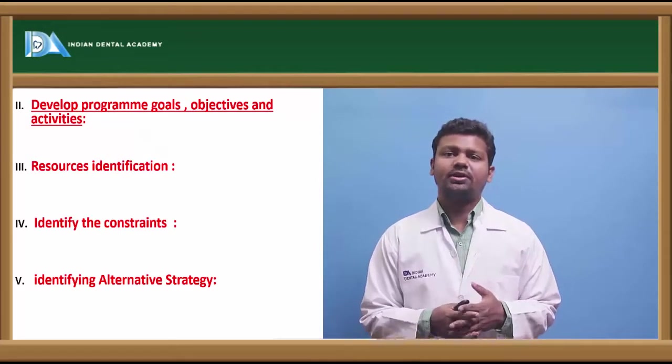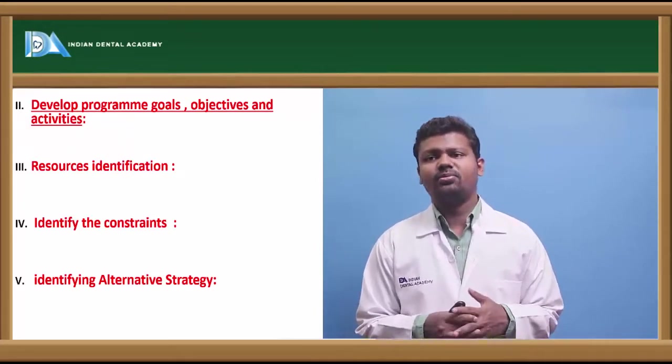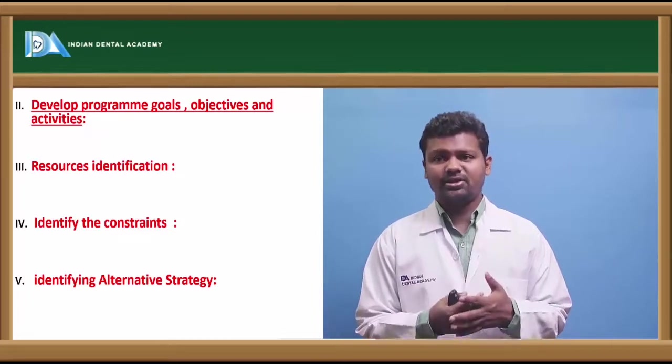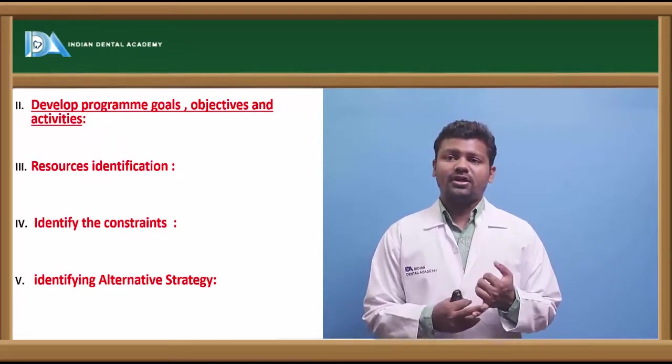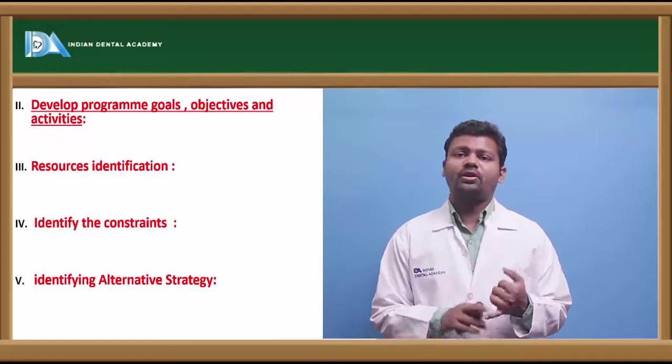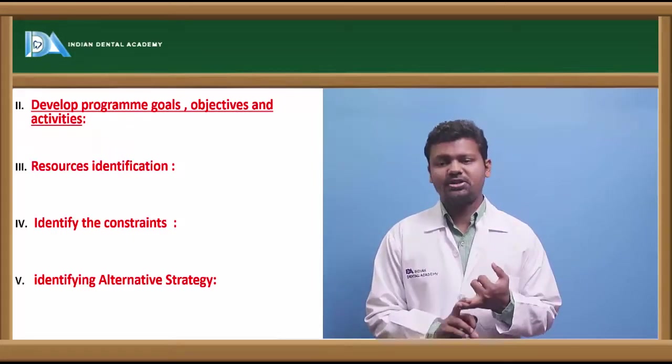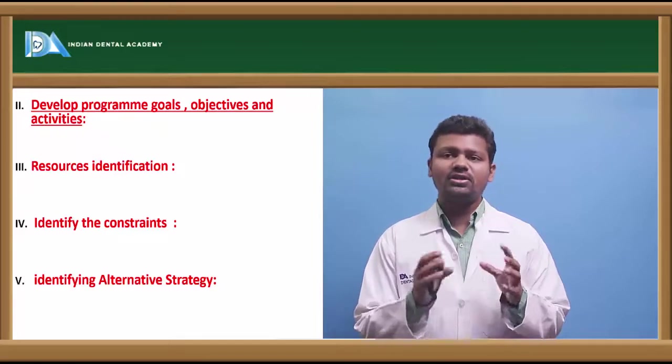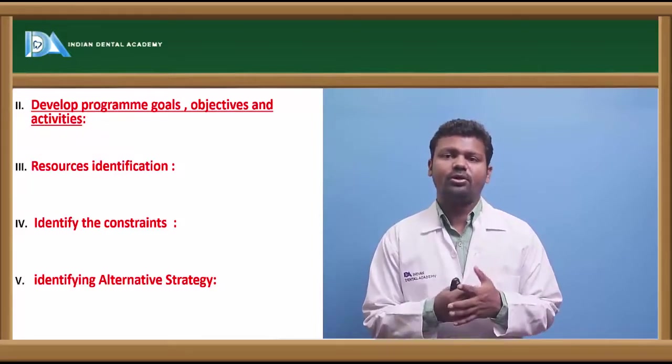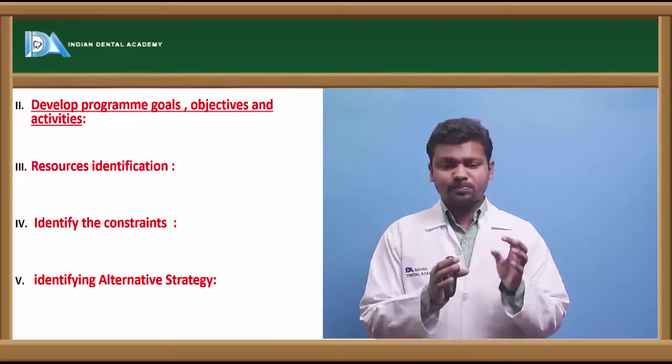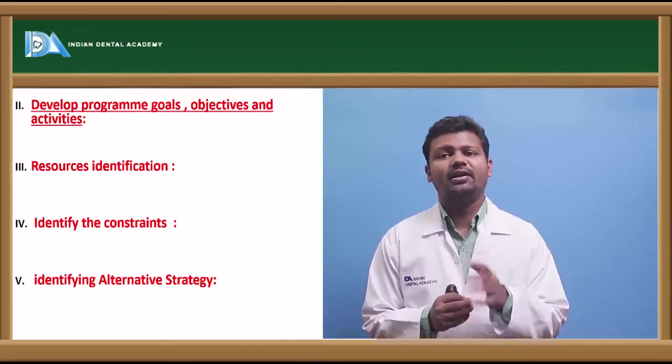Goals are the desire toward which the objectives are achieved. Objectives are precise, it can be achieved. In objectives there should be four types. There should be what is the extent, who are the population to whom we are doing. All these things before development of goals we have to achieve. Now goals is again a thing before the planning study what exactly we have to achieve.